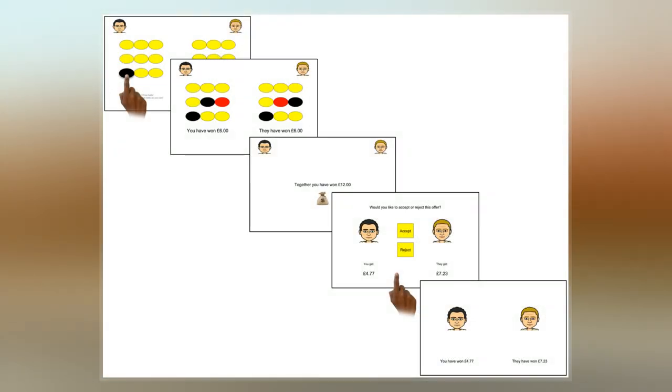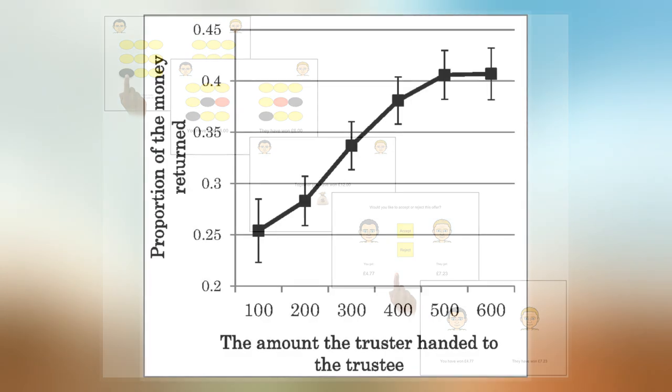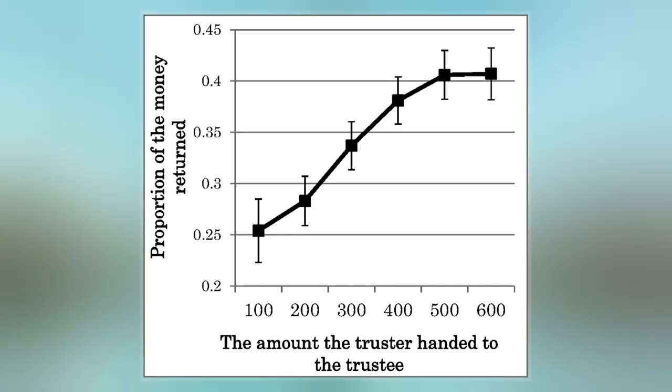For ease of exposition, we will consider the simple example illustrated above, where the proposer has two options: a fair split or an unfair split.